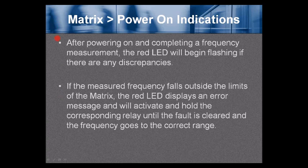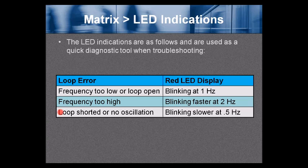After powering on and completing a frequency measurement, the red LED will begin flashing if there are any discrepancies. If the measured frequency falls outside the limits of the Matrix, the red LED displays an error message and will activate and hold the corresponding relay until the fault is cleared and the frequency returns to the correct range.